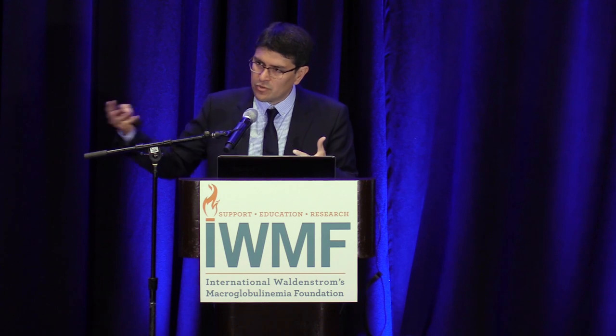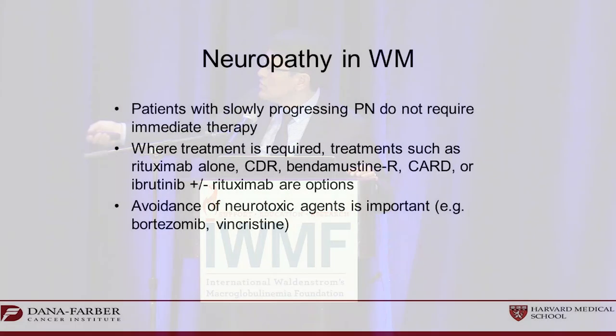Rituximab alone is used frequently for IgM neuropathy, but I'm not completely convinced it's the right approach. If rituximab decreases IgM in only 40–50 percent of patients while other treatments achieve 80–90 percent IgM reduction, I tend to favor those approaches. There's no mortality associated with neuropathy, but there is severe morbidity. We tend to use combinations more than anything else, and we avoid treatments that could potentially cause neuropathy, so Velcade should be minimized. There is also a ranking score — and an app — to quantify how symptoms affect activities of daily living.